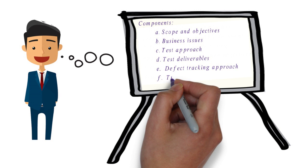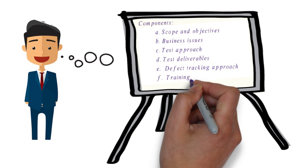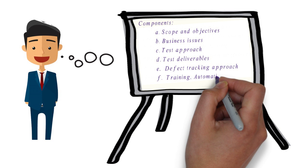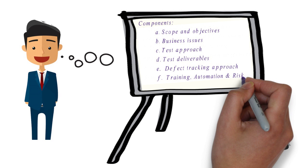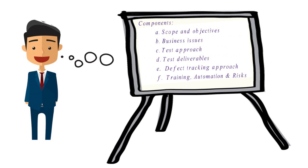The next component is training. If any training is required for the smooth run of the project, that should be facilitated and those details will be captured here. For example, if the testing is for a core banking product, training on the product will be given to the testers. The next component is automation. If automation is required, the tools to be used will be captured here. The final component is risks. If there are any issues in running the project, those details will be captured here. To summarize, the components of a test strategy document are: scope, objective, business issues, test approach, test deliverables, defect tracking approach, training, automation, and risks.